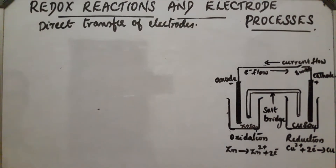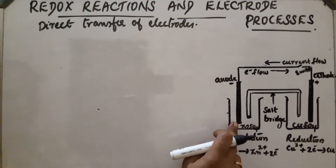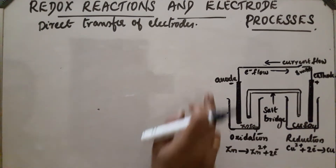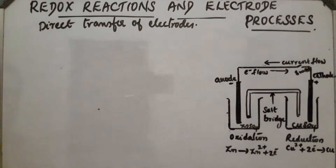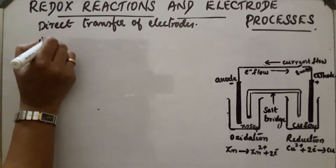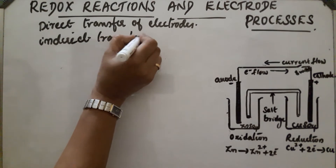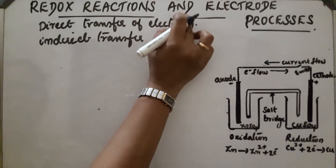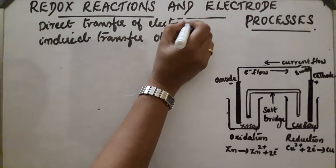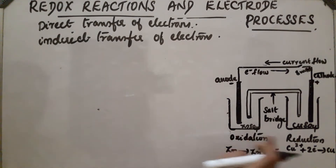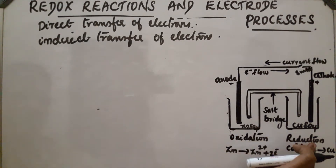If we take zinc in zinc sulfate solution and copper in copper sulfate solution, connected externally through a conducting copper wire, the indirect transfer of electrons takes place. Here, oxidation takes place at one side and reduction takes place at the other.